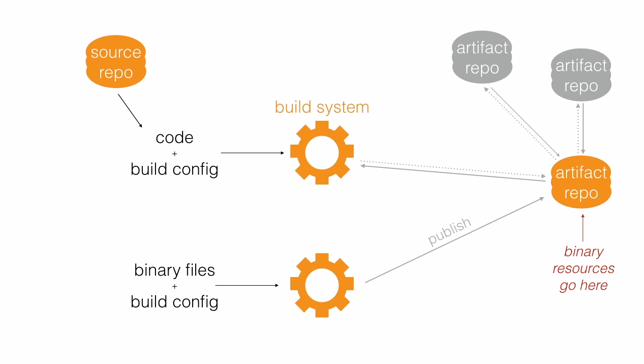That way we'll have a simple command that can bundle up a bunch of binary files and publish them to our artifact repository as a resource library with a name and a version.